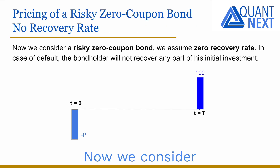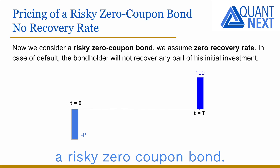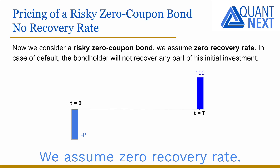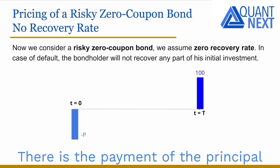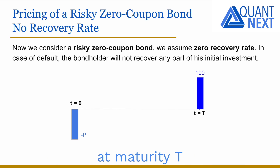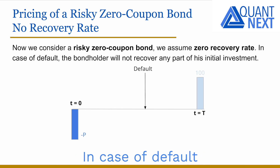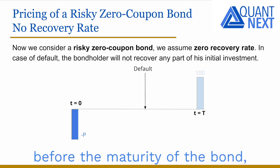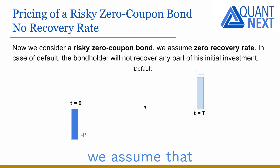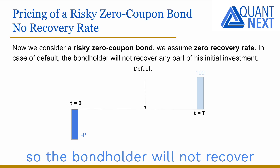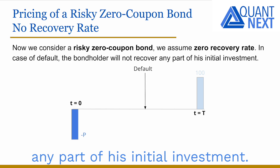Now we consider a risky zero coupon bond. We assume zero recovery rate. There is a payment of the principal at maturity t if there is no default before. In case of default before maturity, we assume zero recovery rate, so the bondholder will not recover any part of his initial investment.